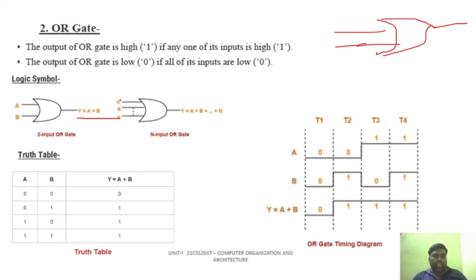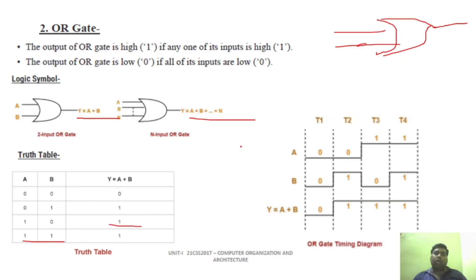The OR gate can have multiple inputs. Looking at the truth table: 0+0=0, 0+1=1, 1+0=1, and 1+1=1 in OR gate logic. The output of the OR gate is high if any one of the inputs is high. Only when both inputs are zero will the output be zero.